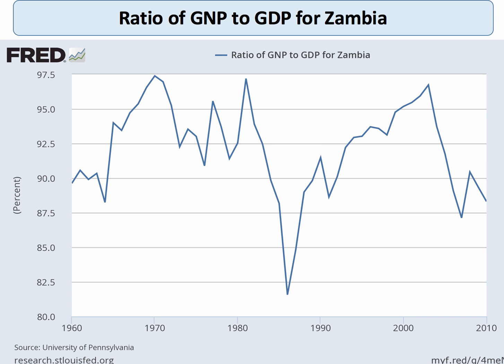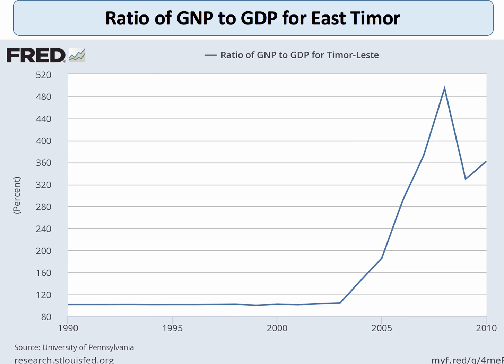Zambia is a country where the ratio of GNI to GDP is also less than 100%, partly because a lot of mining takes place in Zambia and the profits of the multinational mining corporations tend to leave the country. And here's the extreme example of East Timor, where GNI relative to GDP is more than four times — in other words, this is a country heavily dependent on overseas aid.